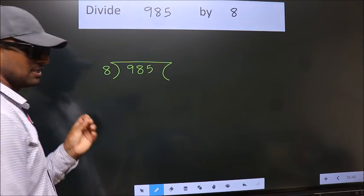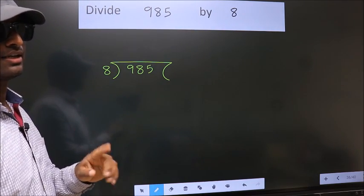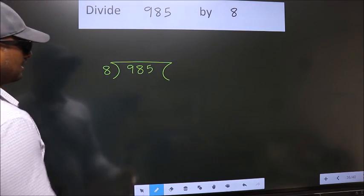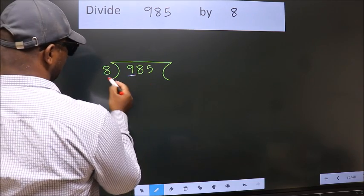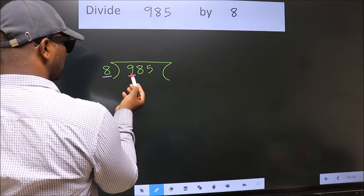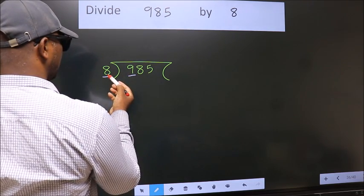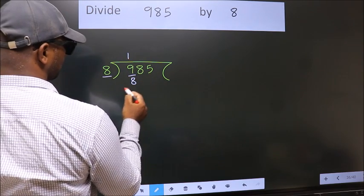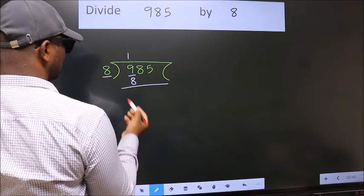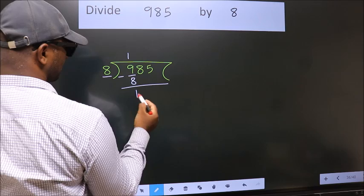This is your step 1. Next, here we have 9, here 8. A number close to 9 in the 8 table is 8 once, 8. Now, we should subtract. We get 1.